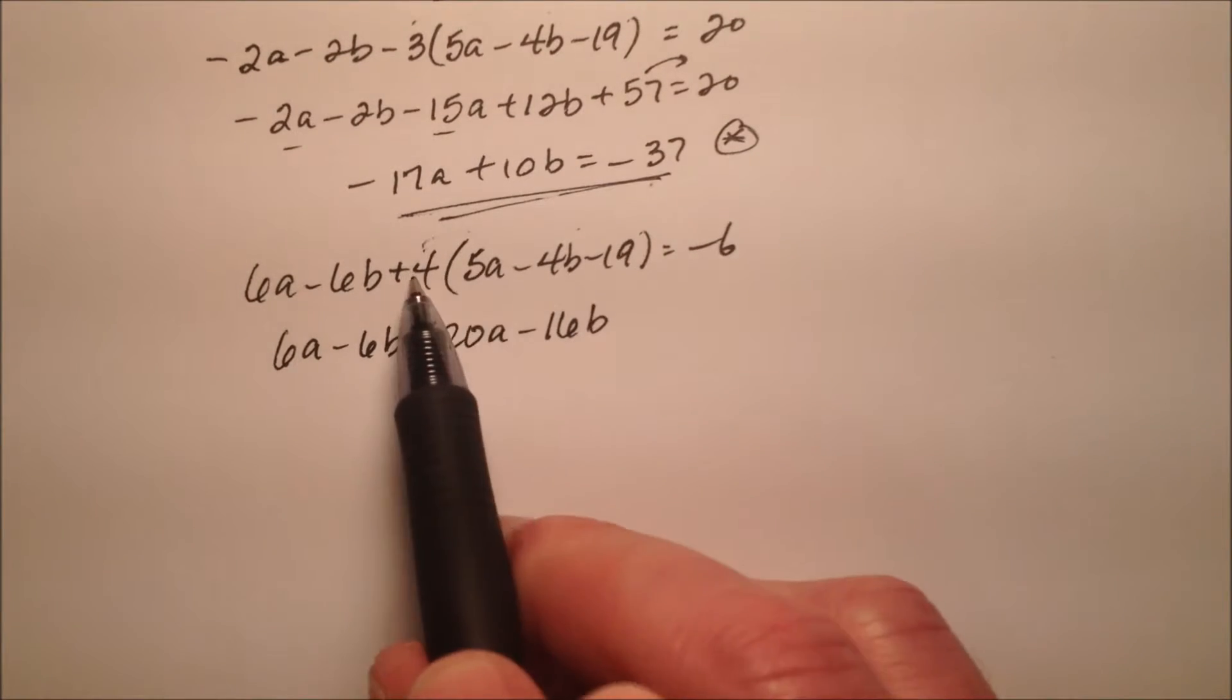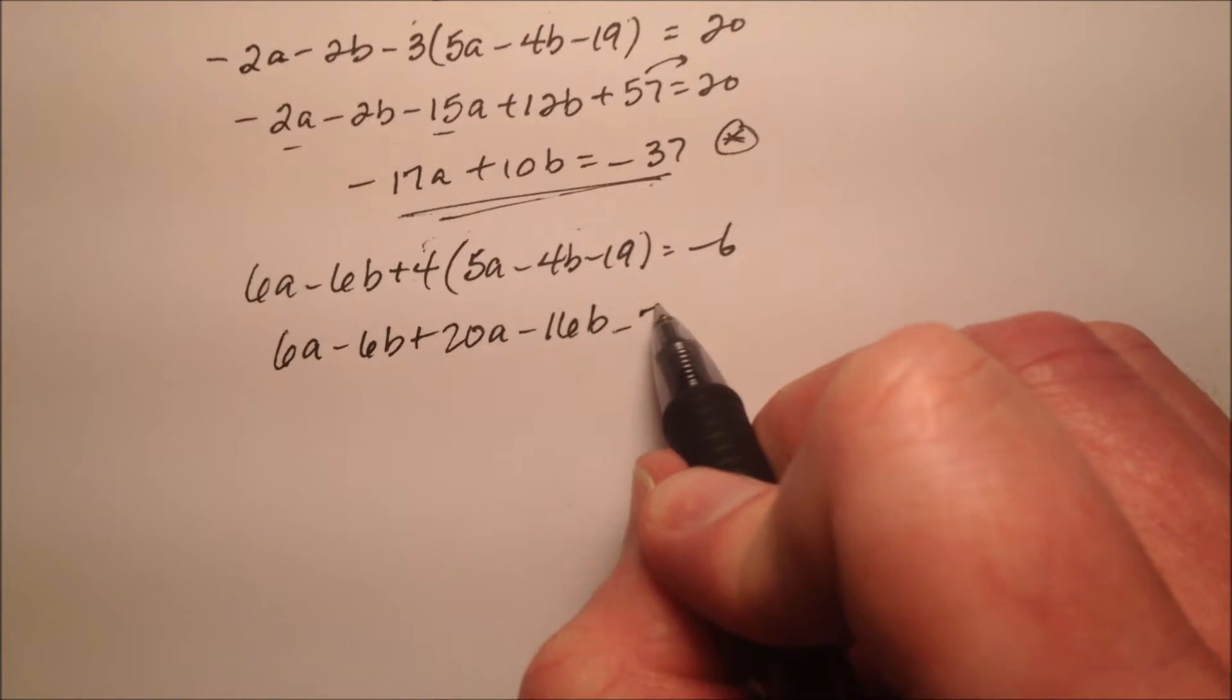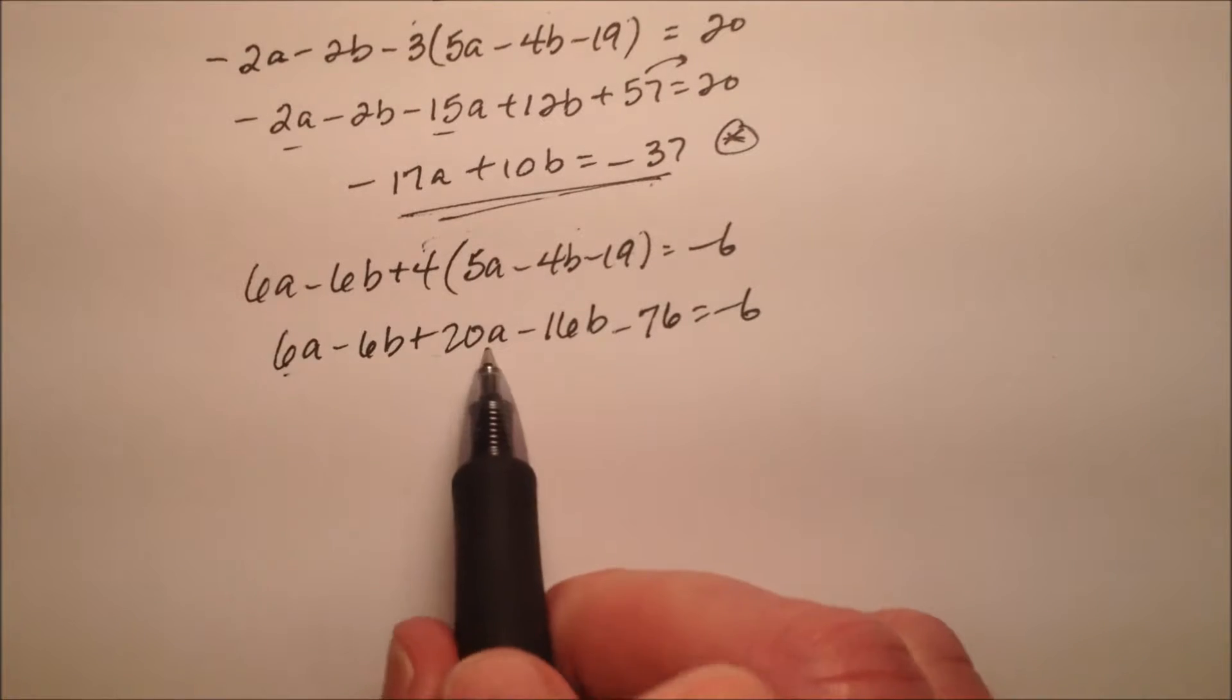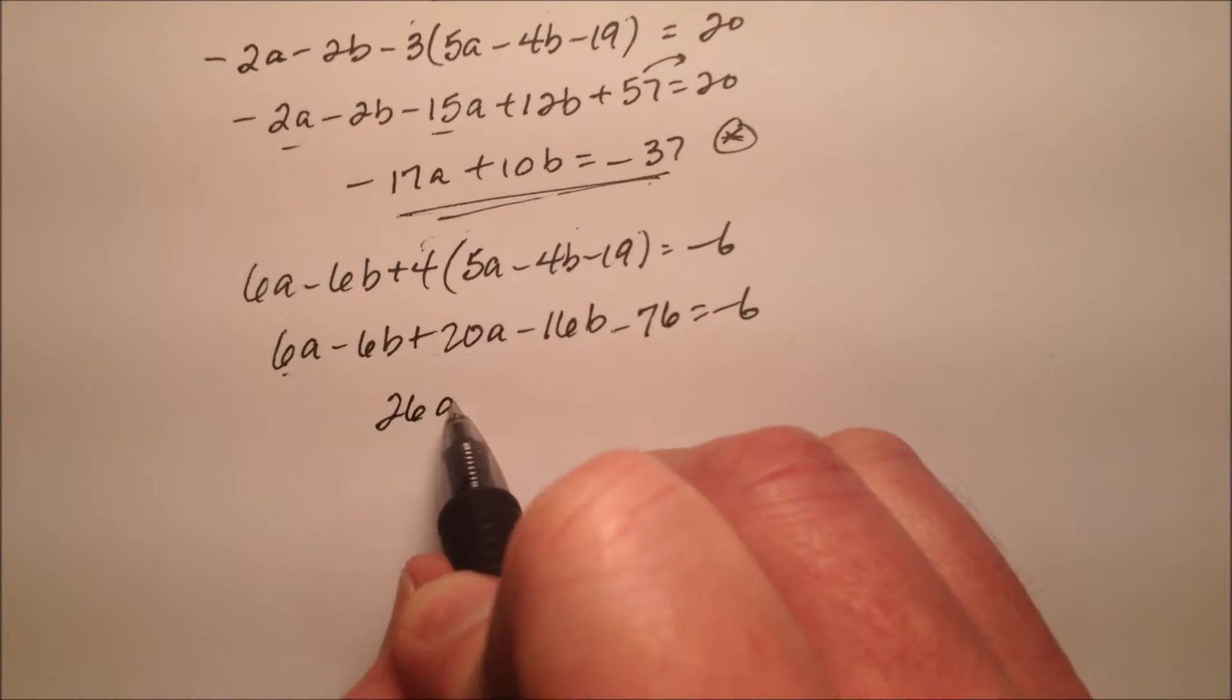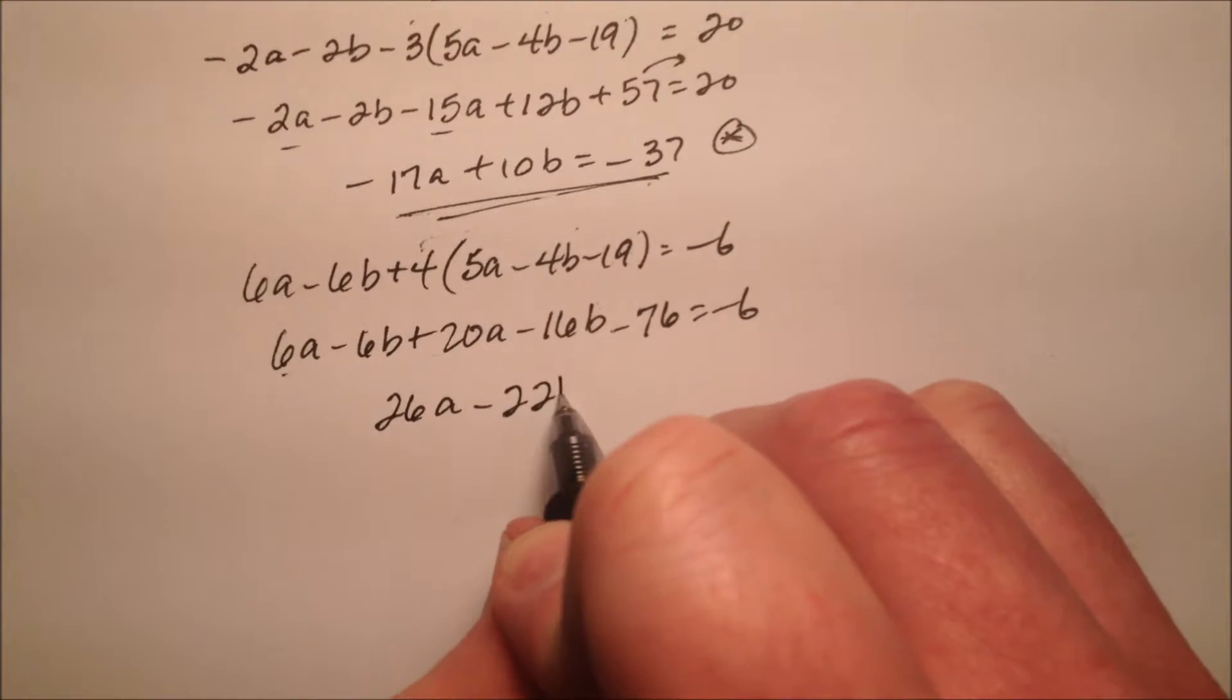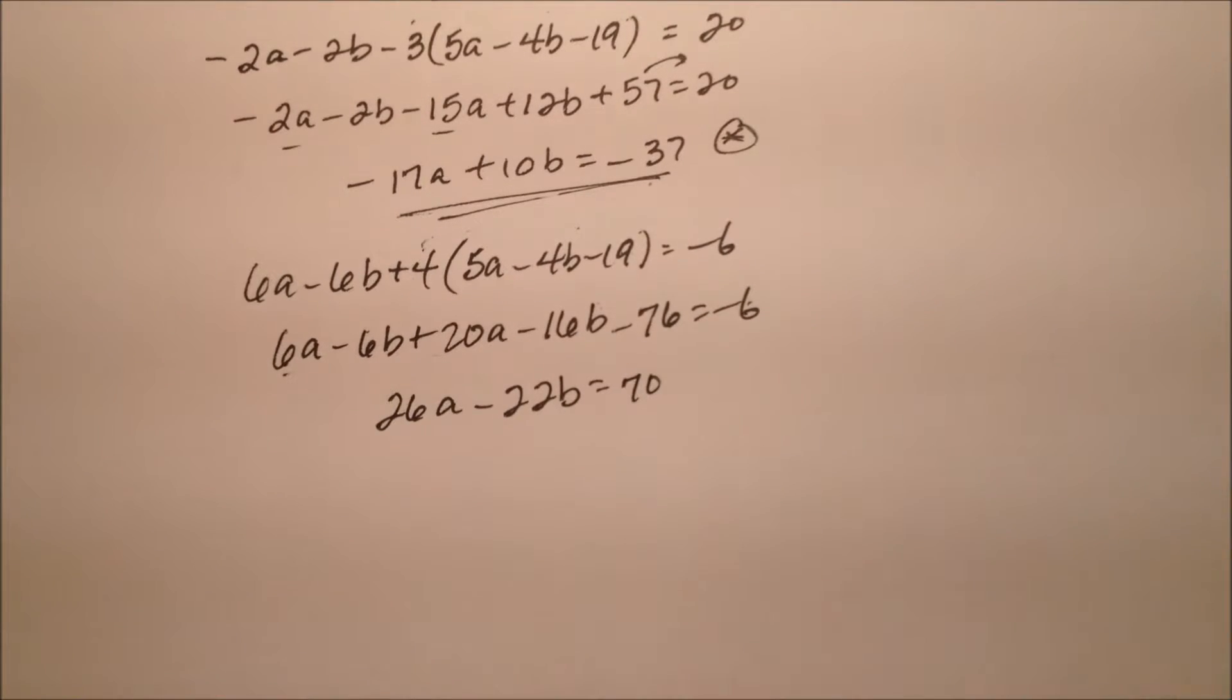and multiplying this by 4, I can just double it twice, so 38 and then 76 equals negative 6 there, and let's combine our a's to get 26a, and our b's to get negative 22b, and then I'm going to add 76 to get a positive 70.